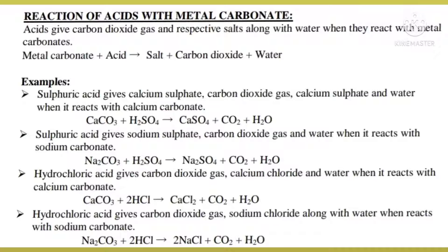The next chemical property is the reaction of acids with metal carbonates. When an acid reacts with a metal carbonate, the products are a salt, carbon dioxide, and water. For example: calcium carbonate plus sulfuric acid gives calcium sulfate, CO₂, and water. Sodium carbonate plus sulfuric acid gives sodium sulfate, CO₂, and water. Calcium carbonate plus hydrochloric acid gives calcium chloride, CO₂, and water. Sodium carbonate plus hydrochloric acid gives sodium chloride, CO₂, and water.